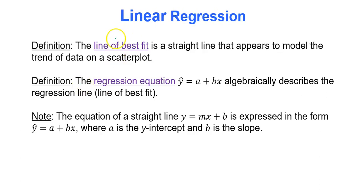With regard to linear regression, the line of best fit is a straight line that appears to model the trend of data on a scatter plot. The regression equation describes that regression line, that line of best fit. The equation of that regression line is y hat equals, because it's used to predict y values, that's why there's a hat on it, it's a predictor.